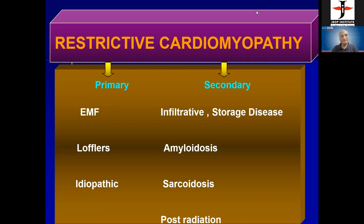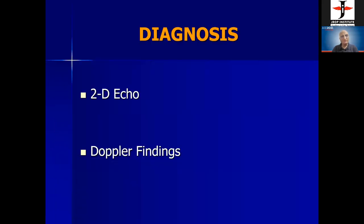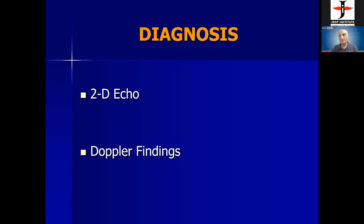Coming to restrictive cardiomyopathy — types include idiopathic, Loeffler (eosinophilic), endomyocardial fibrosis, amyloidosis, and post-radiation. Diagnosis is based on 2D echo and Doppler findings; advanced diagnosis is done by MRI, which is the best test for restrictive cardiomyopathy. Previously, myocardial biopsy was used but was found unreliable because the sampled portion may not represent the disease.